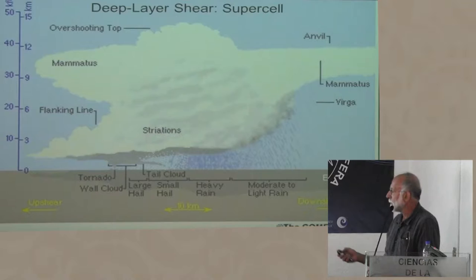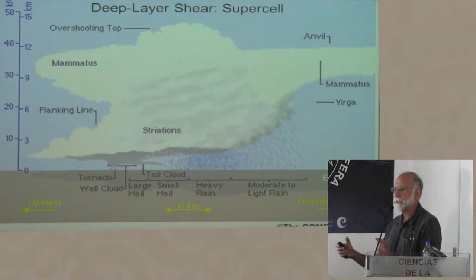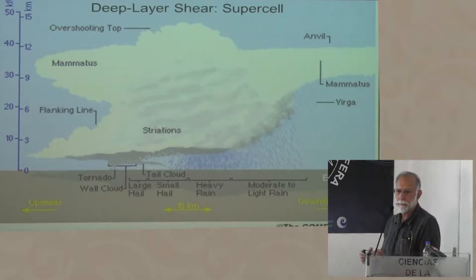In the mid-1970s, computers became big enough to run three-dimensional models of cumulus convection. At the same time, the other major innovation was dual Doppler radar. It became possible in the late 1970s to scan thunderstorms with radars, map out the velocity distribution in 3D and in time, and compare it to the output of numerical models. For the first time, we could see if the numerical models were getting anything like what the observations showed, because there were no observations of this sort of completeness before the 1970s.